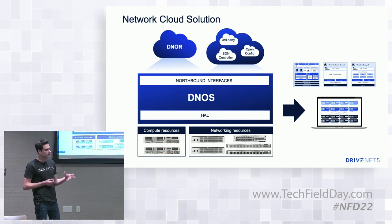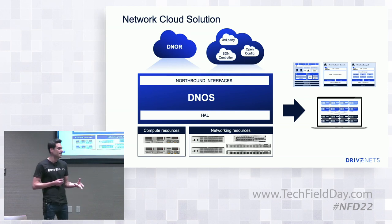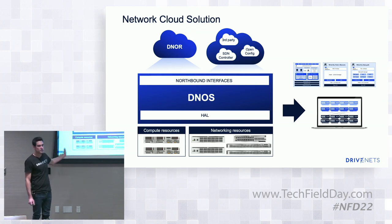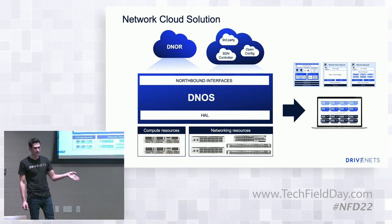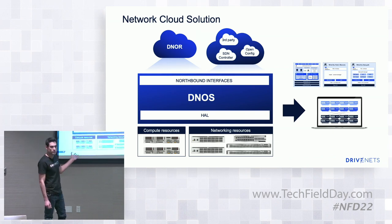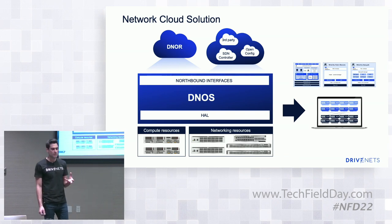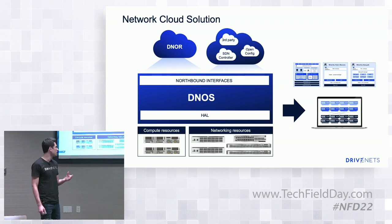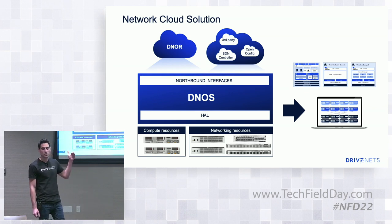So what is DINOS, the DriveNet Network Operating System? It's much more than just a network operating system — it's a virtualization layer over white boxes and over services. The way we look at the problem, it's an orchestration problem. We have compute resources like x86-based servers, where the control plane and data plane protocols can run, and networking resources with ASICs based on the Broadcom Jericho 2 family, exposing forwarding services like VOQs and quality of service.